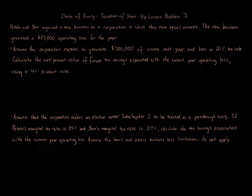This problem covers choice of entity taxation and start-up losses. Potato and Yam organized a new business as a corporation in which they own equal interests. The new business generated a $65,000 operating loss for the year. Assume the corporation expects to generate $500,000 of income next year, has a 21% tax rate, and calculate the net present value of future tax savings using a 4% discount rate. Also assume the corporation makes an election under Subchapter S to be treated as a pass-through entity. Potato's marginal tax rate is 35% and Yam's is 37%. Calculate the tax savings associated with the current year operating loss; assume basis and excess business loss limitations do not apply.